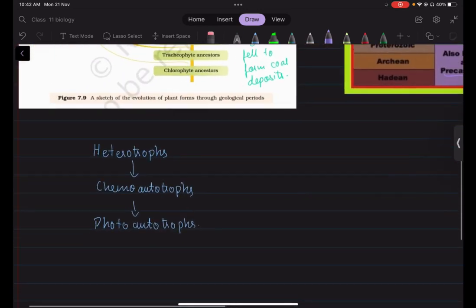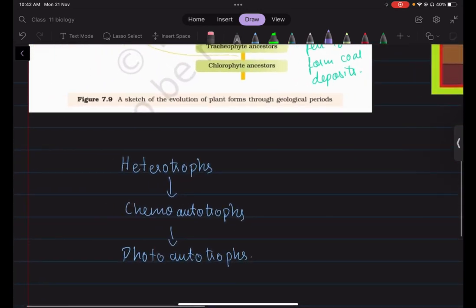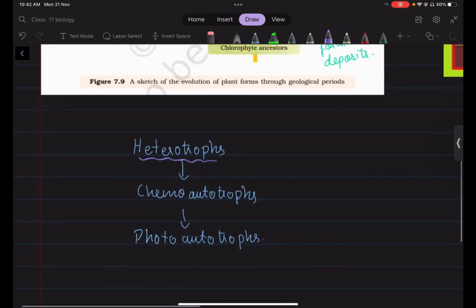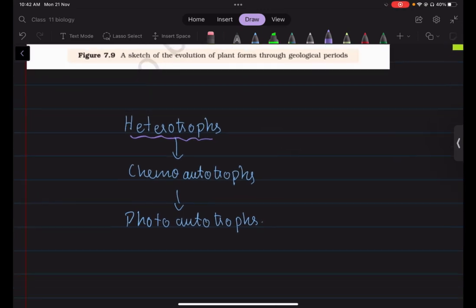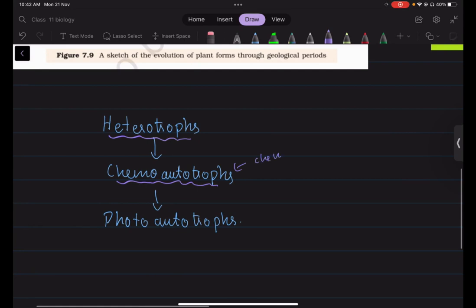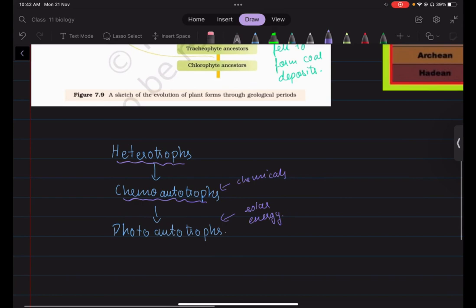So we need to understand that first cells were heterotrophs. They were dependent on various sources to get their nutrients. Later they evolved into chemo-autotrophs that is they derived their nutrients from chemicals. And then finally we got photo-autotrophs that were dependent on solar energy to get nutrients.